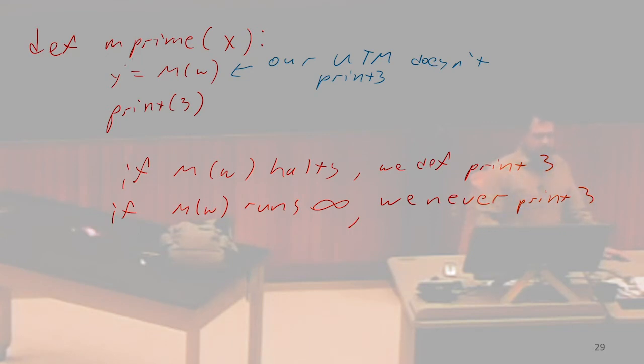So this function, M prime, halts if and only if M on W is going to halt. So we do have this extra assumption that the method we use to simulate M on W is never going to print 3. So we have this assumption already. Let's just assume that's not going to happen. So assuming that this is going to be the case, the only way we could print 3 is if M on W halted.